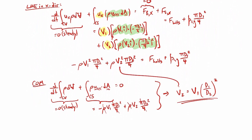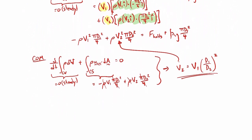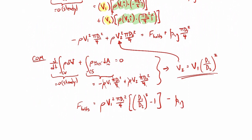That result from conservation of mass — v2 = v1*(d1/d2)² — can now be substituted into the linear momentum equation. It's very common to use conservation of mass in linear momentum problems to resolve unknown variables. Rearranging and solving for f_bolts gives us the final answer for the force in the bolts.